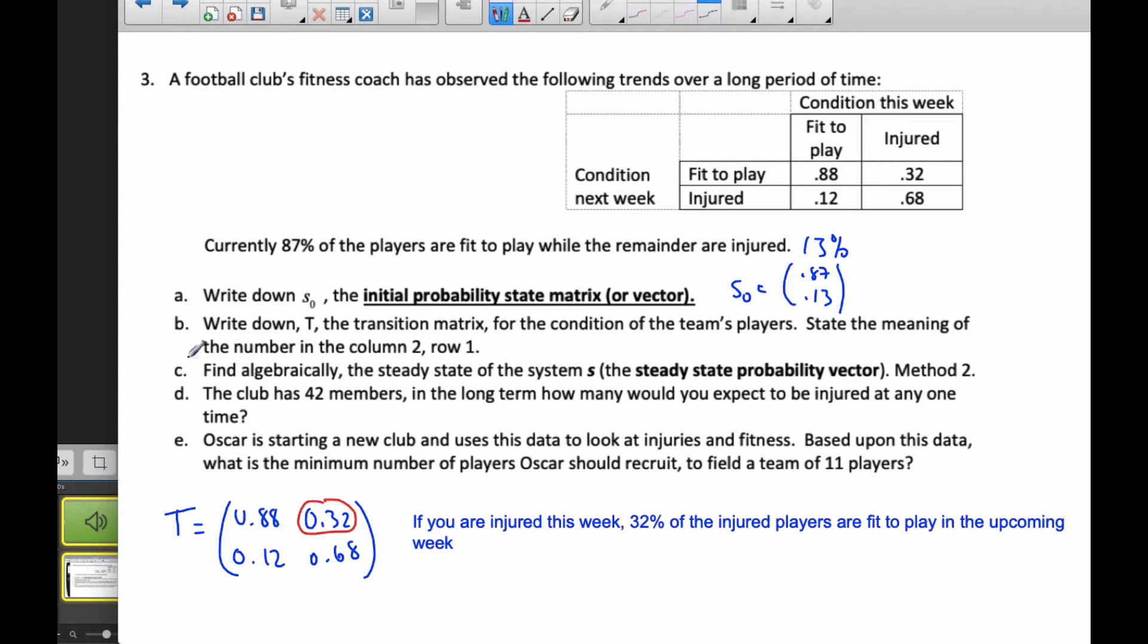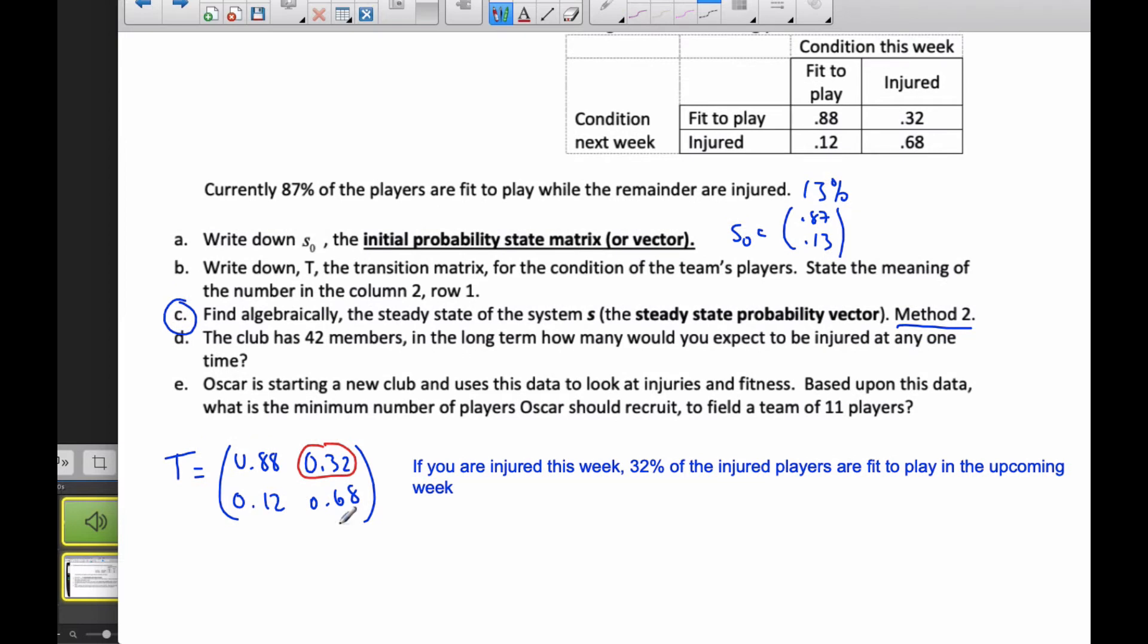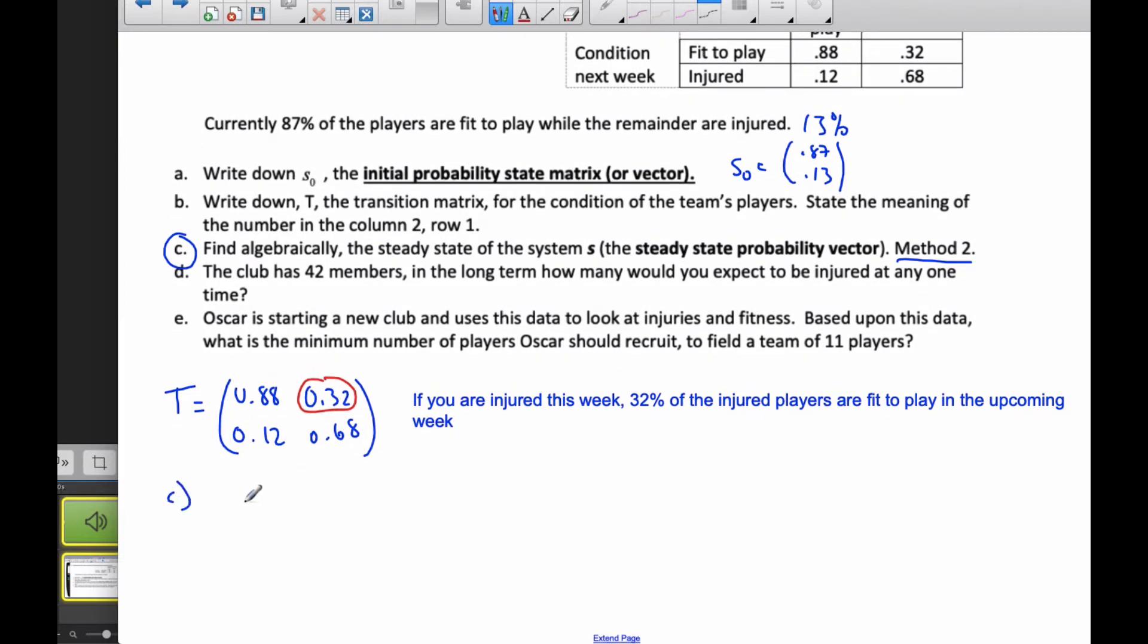So moving on to the C part, it says find algebraically the steady state system S I'm looking for. The steady state probability vector is what I'm looking for. This is method 2. There's two different ways to do it. Method 1, if you recall from the previous video, was when you found S equal to T to the N times the initial value when N got really large. But this time we have to do it algebraically.